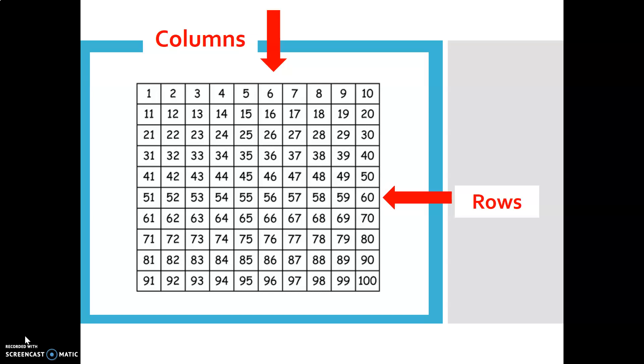This is what a hundred square looks like. It starts at number one and goes all the way down to a hundred. There are ten columns that go down and ten rows that go across.